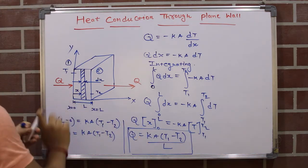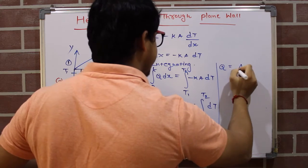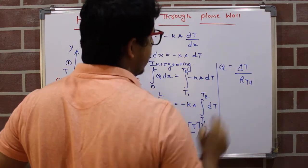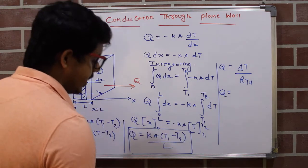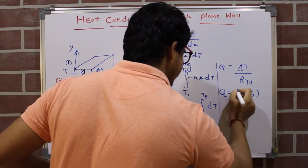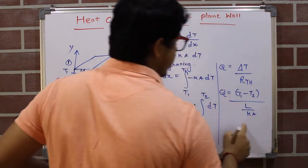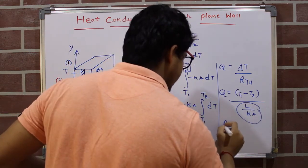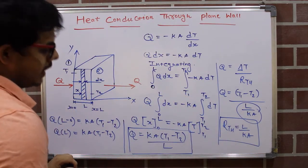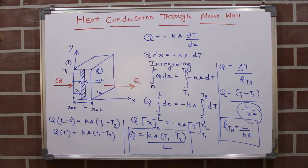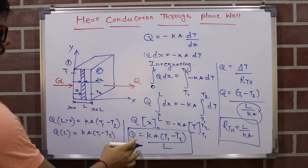If we also want to find the thermal resistance of this plane wall, we rearrange the equation into the form Q = ΔT / R_th. So Q = (T1 − T2) / (L / kA). Comparing the two equations, we get R_th = L / (kA), where L is the thickness of the plane wall, k is the thermal conductivity, and A is the area perpendicular to the heat flow.